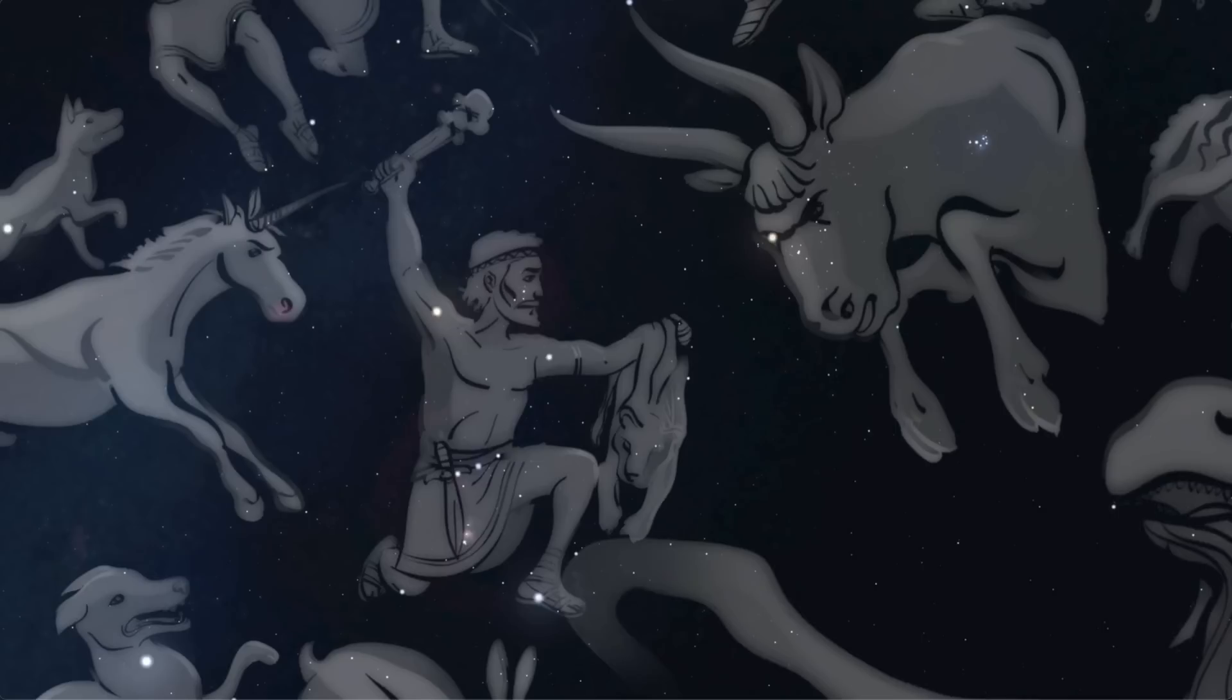One day, Orion was hunting on the island of Crete with the goddess Artemis. During the hunt, for some reason, Orion threatened to kill every beast on Earth. Gaia was horrified and sent a giant scorpion to kill Orion. The creature succeeded in its mission, and after his death, the goddesses asked Zeus to place Orion among the constellations.